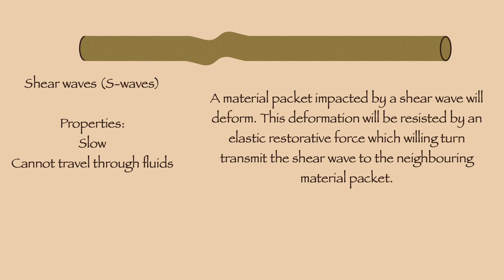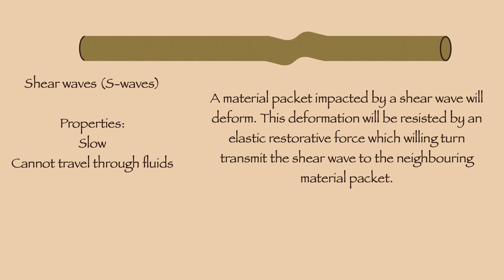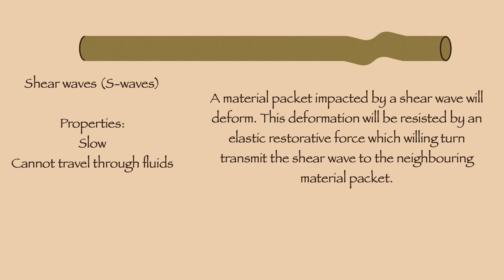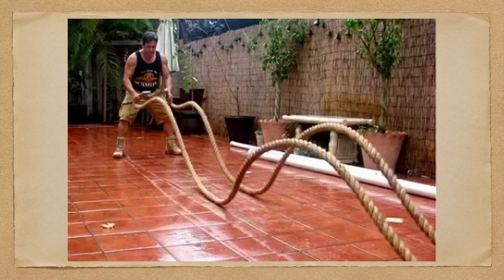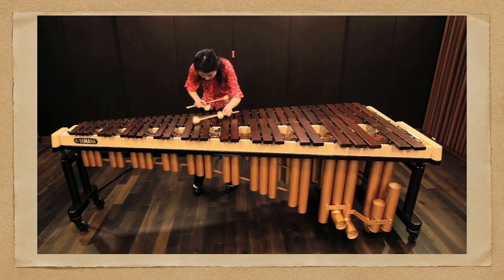Because each element of material within the cylinder is connected to its neighbors, when it is displaced upwards or downwards, it drags its neighbor upwards and downwards, and thus propagates the force that was applied to it. Because of their different mode of propagation, shear waves are much slower than P-waves, and cannot travel through fluids such as gases or liquids. Everyday examples of this class of wave include the rope waves mentioned earlier, or the vibrations set up in percussion instruments when struck by a stick or a hammer.